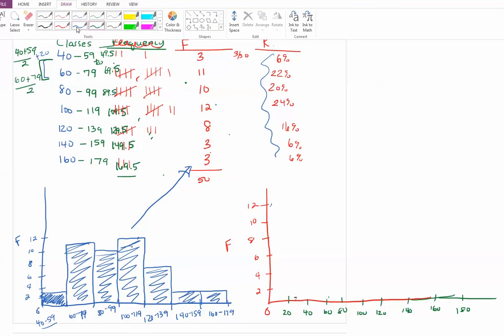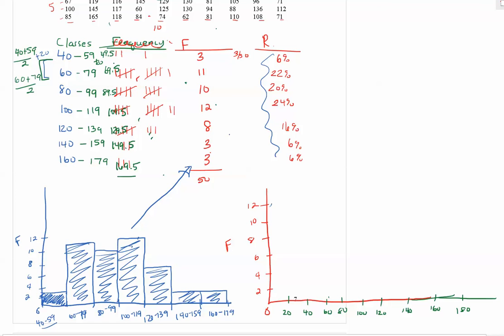Now go to the midpoint of each class and you plot a point at its height. So my first midpoint was 49.5, which would be right around 50. You want to go up to a height of 3 and plot a point. Next midpoint was 69.5 with a height of 11.